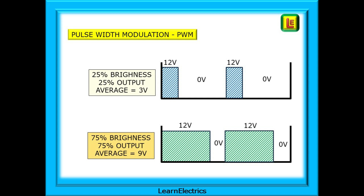Pulse width modulation can change the average voltage reaching the LED part of the lamp. Make the pulse width — the dimmer on period — much shorter than the off period and the average voltage will fall. In this case, to just 25%, or 3 volts, and the LED lamp will appear very dim. Turn the brightness up to 75% and the on pulse is much longer than the off period — the lamp is at 75% brightness, and 75% of 12 volts gives a 9 volt output to the LEDs.